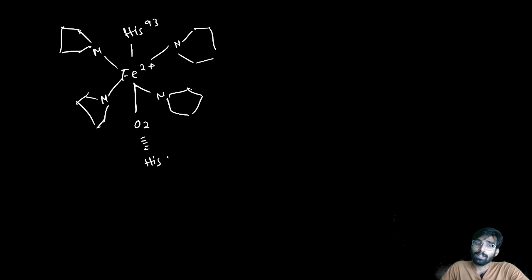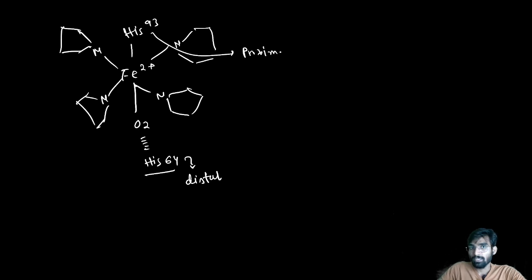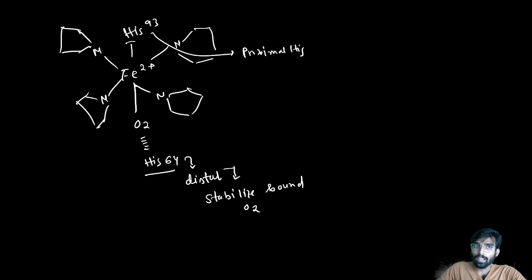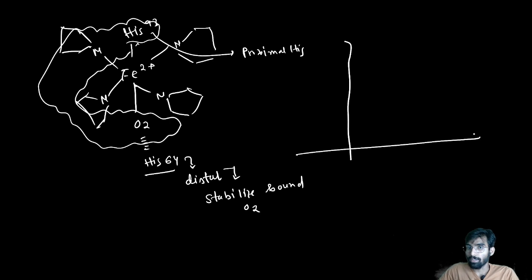Hemoglobin = heme + globin. Heme is the prosthetic group and globin is the protein that carries oxygen. Oxygen is attached to the heme group and is stabilized by histidine 64, called the distal histidine, while histidine 93 is called the proximal histidine. The distal histidine's role is to stabilize the bound O2.